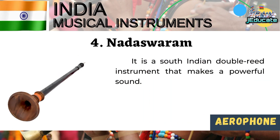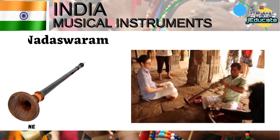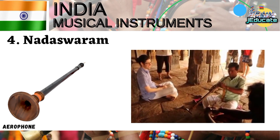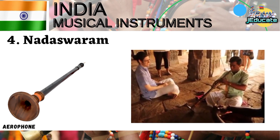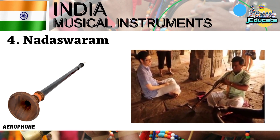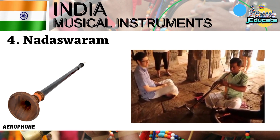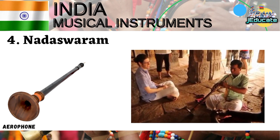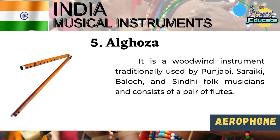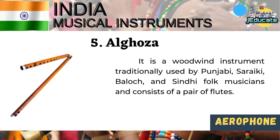Number 4, Nadaswaram — it is a South Indian double reed instrument that makes a powerful sound. Number 5, Algoza — it is a woodwind instrument traditionally used by Punjabi, Sariiki, Balochi, and Sindhi folk musicians, and consists of a pair of flutes.